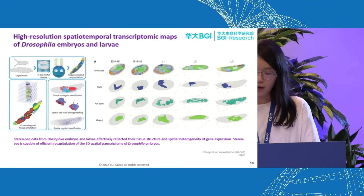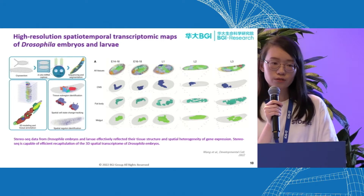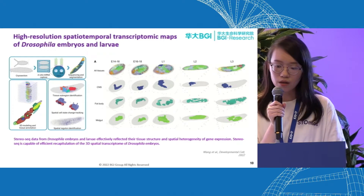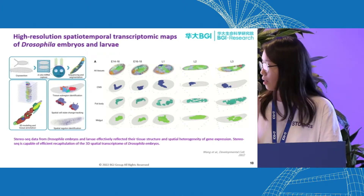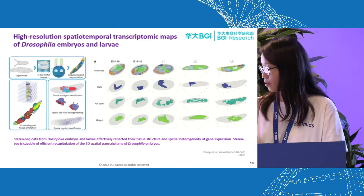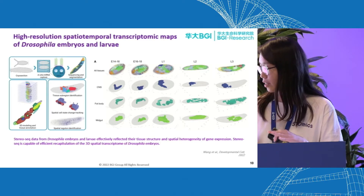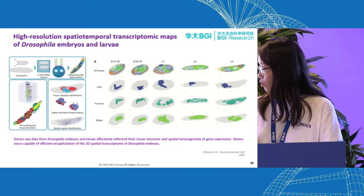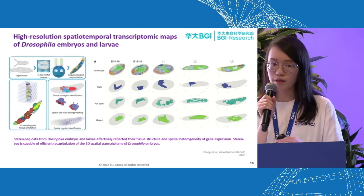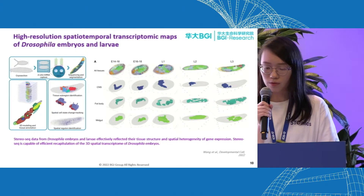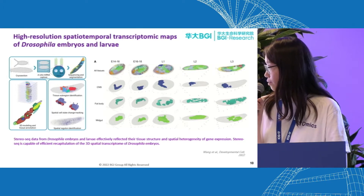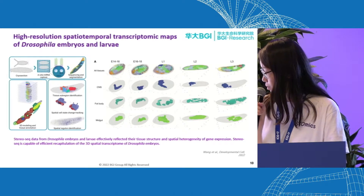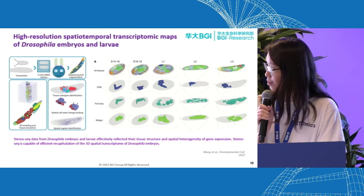Here we have another example where StereoSeq was used to do a 3D reconstruction of the Drosophila embryo and also larvae. In this paper, we take consecutive sections from one single sample, and by overlaying or linking the sections together, we can start to see some of the internal organs — for example, the midgut, the fat body, and also the CNS. This is something quite impressive.